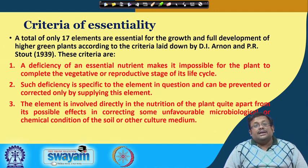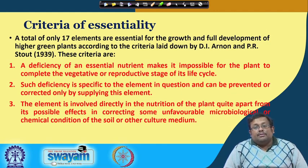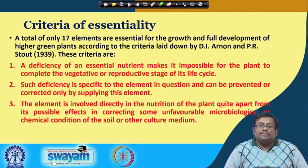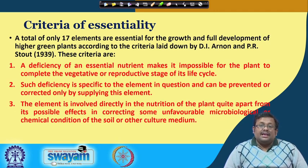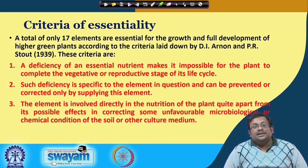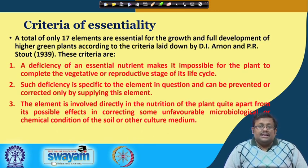The three criteria are: first, a deficiency of an essential nutrient makes it impossible for the plant to complete the vegetative or reproductive stage of its life cycle. Second, such deficiency is specific to the element in question and can be prevented or corrected only by supplying this element. Third, the element is involved directly in the nutrition of the plant, quite apart from its possible effects in correcting some unfavourable microbiological or chemical condition of the soil or other culture medium.